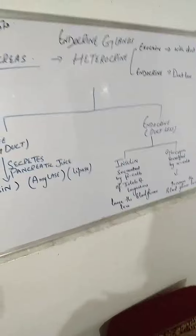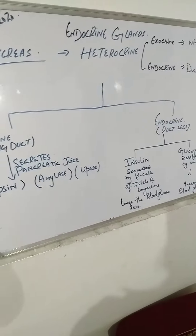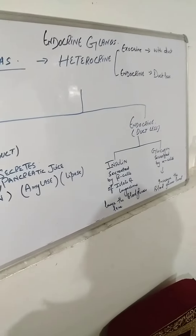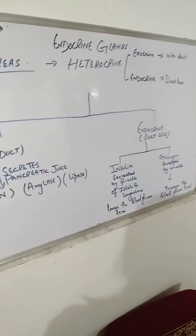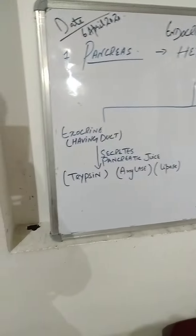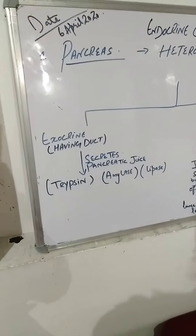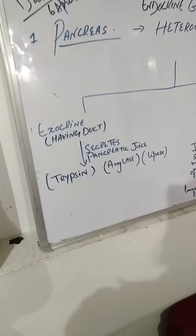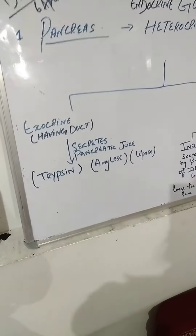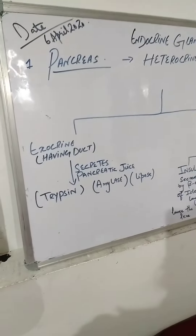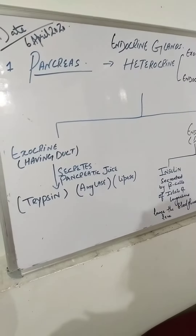The exocrine part has ducts, while the endocrine part is also called the ductless gland. As an exocrine gland, it secretes enzymes: trypsin, amylase, and lipase.